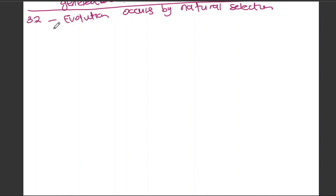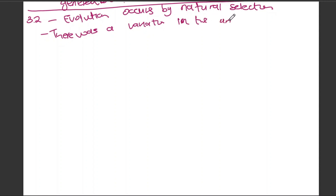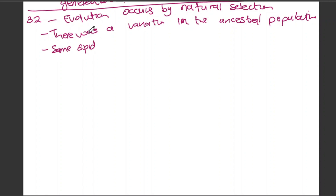Then we talk about the variation. There was a variation in the ancestral population — the word 'population' has to be there, not just 'organisms.' In this population, some spider monkeys had short tails and some had long tails — those are the characteristics we're talking about.